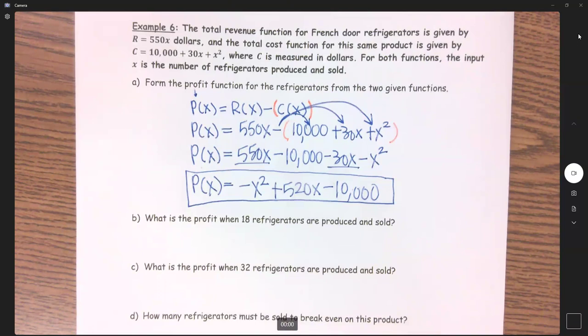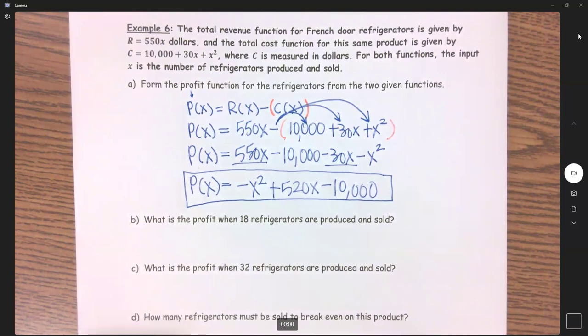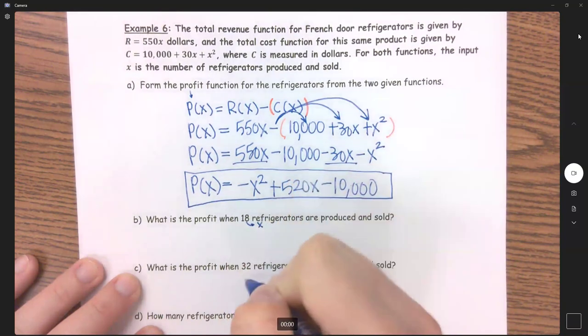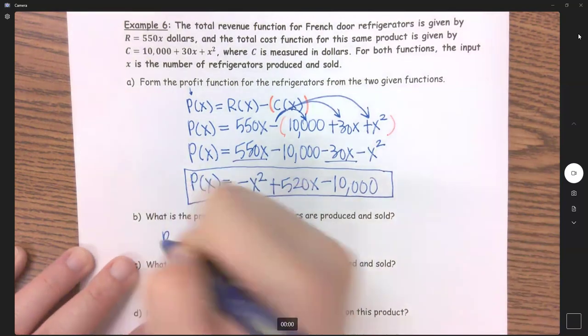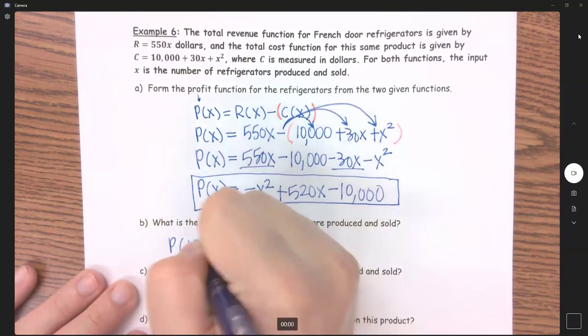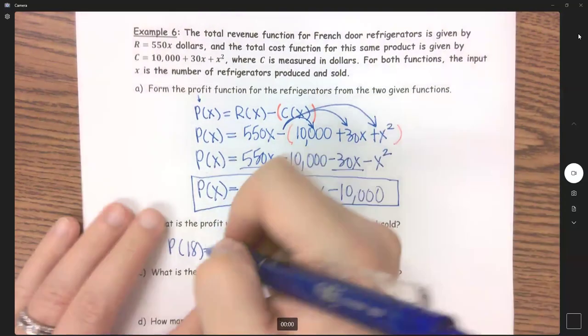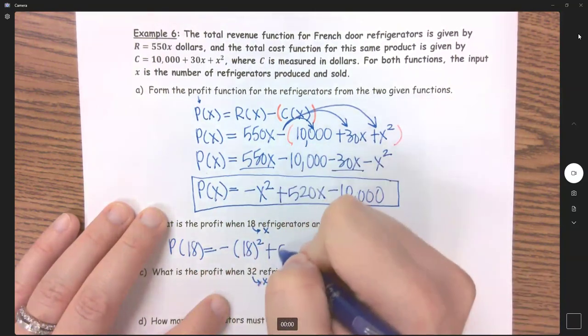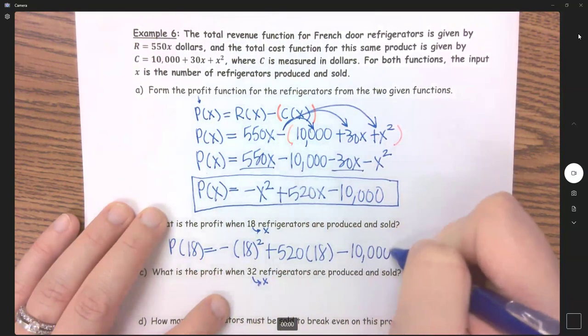So B and C are just substitution. What is the profit when 18 refrigerators are produced and when 32 are produced? So this is representing my P of X. I'm going to first find P of 18, since X is 18, and plug in 18 for both of these X's here. So negative 18 squared plus 520 times 18 minus 10,000.